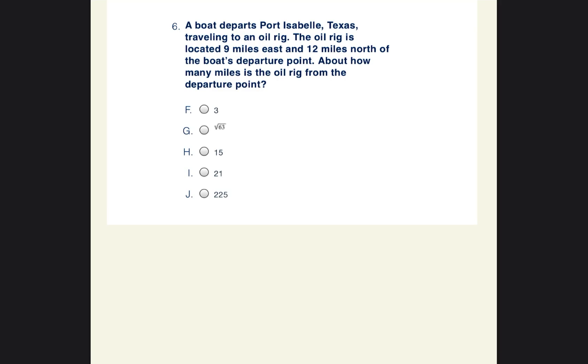So let's get started. It says a boat departs Port Isabelle, Texas, traveling to an oil rig. The oil rig is located 9 miles east and 12 miles north of the boat's departure point. About how many miles is the oil rig from the departure point? So we're talking about north and east. I'm just going to go ahead and make a little compass - north and south, west and east. So it departs from here, so this is the departure point. Then it says it's located 9 miles east, so first it goes 9 miles east, this way.